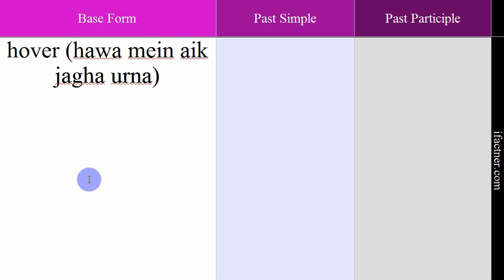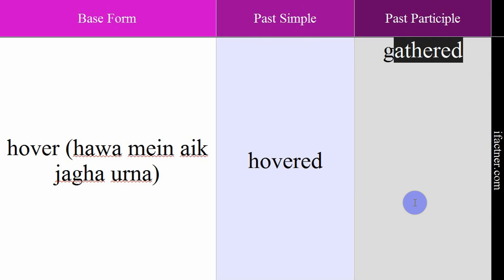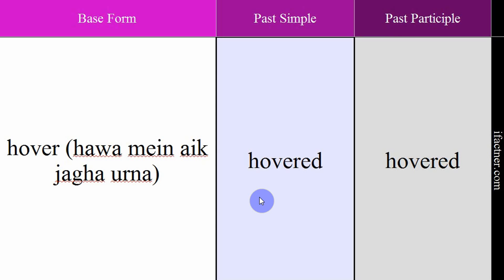The next verb is 'hover', meaning hawa mein ek jagah udna ya khada hona — to hover in the air. Example: 'This board will help me in hovering.' — Yeh board mujhe madad karega hawa mein ek jagah khade rehne mein, like hoverboards. Past simple and past participle: hovered. Past simple: 'The boat hovered above the water.' — Jo boat hai woh paani ke upar hawa mein khadi rahi. Past participle: 'Nobody has hovered.' Verb: hover. Meaning: hawa mein ek jagah udna. Past simple: hovered. Past participle: hovered.